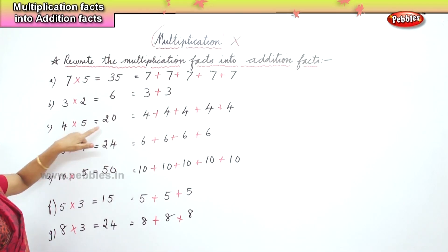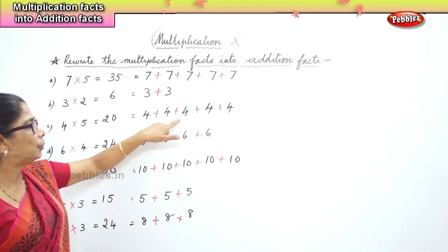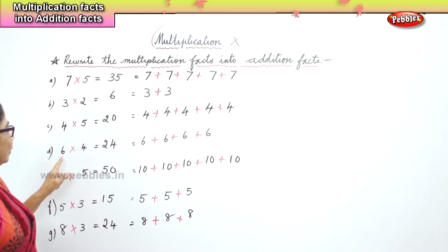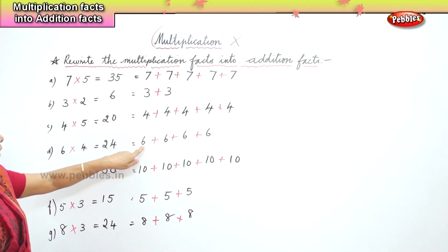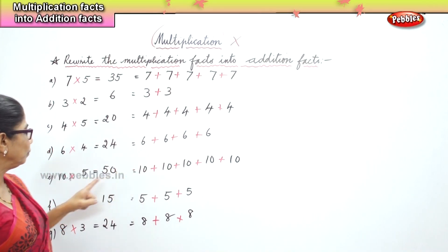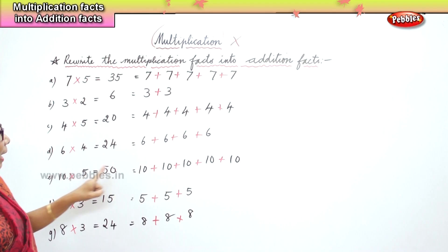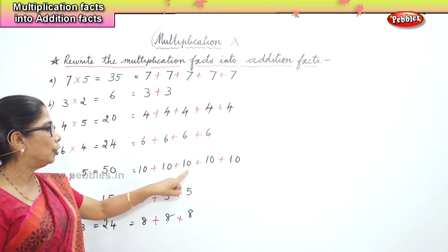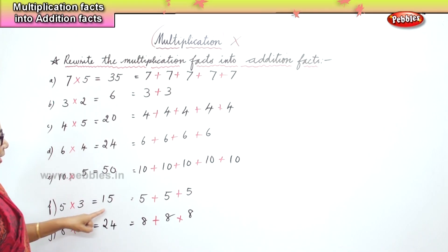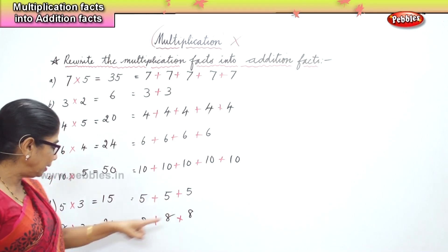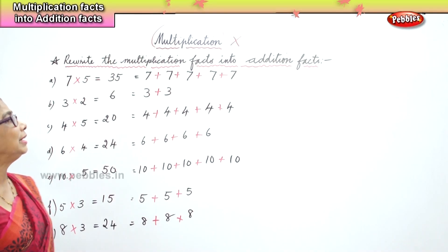Four fives are twenty — four, how many times? Five times: one, two, three, four, five. Six fours are twenty-four — six how many times? Four times: one, two, three, four. Ten fives are fifty — ten how many times? Five times: one, two, three, four, five — addition fact. Five threes are fifteen — five how many times? Three times. Eight threes are twenty-four — eight how many times? Three times.